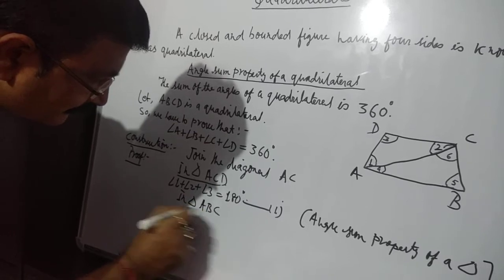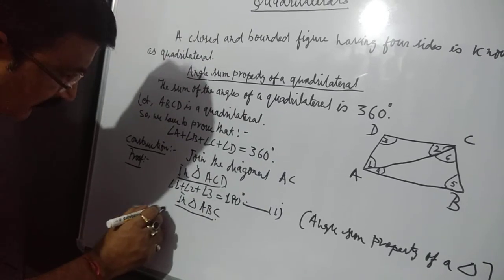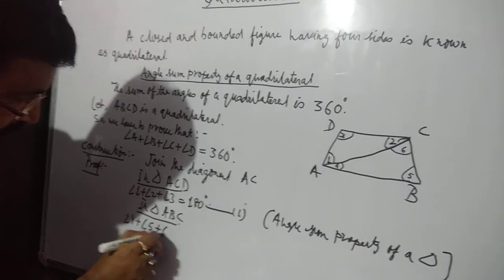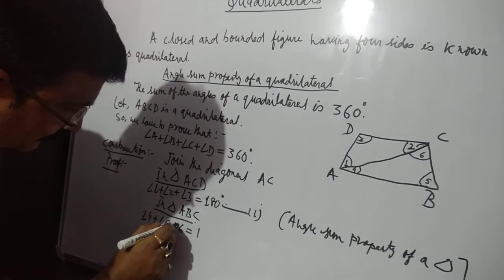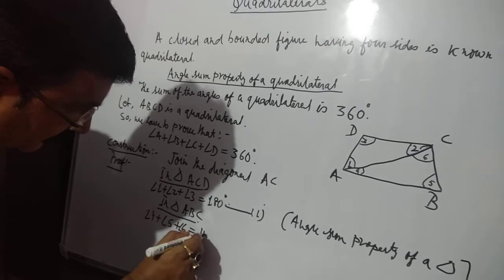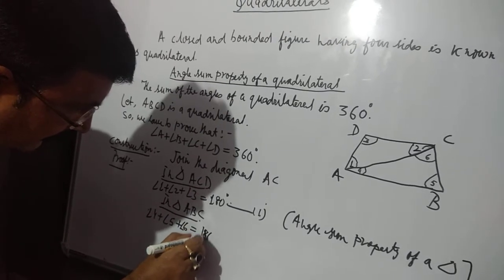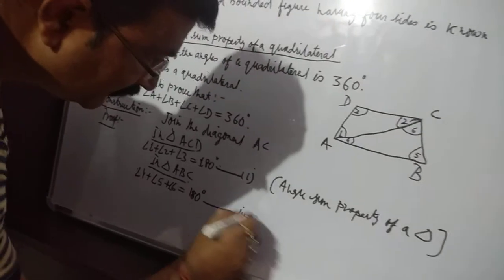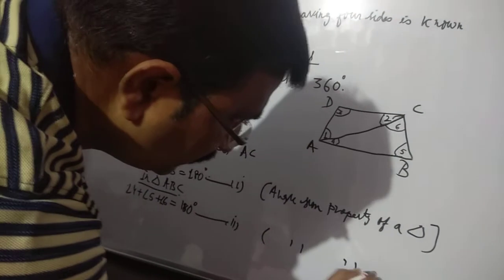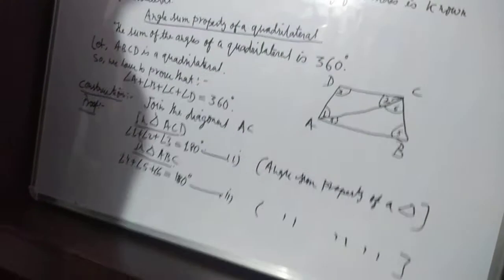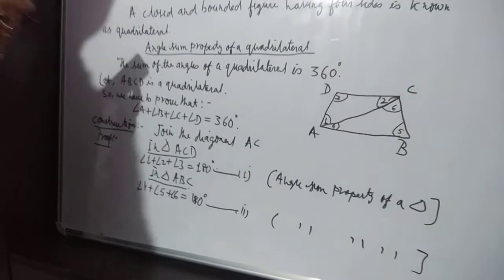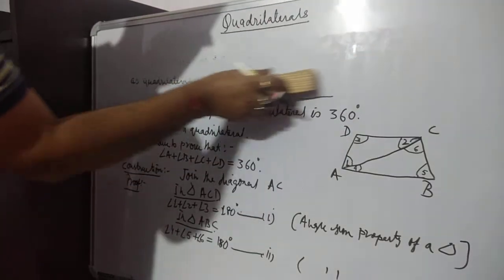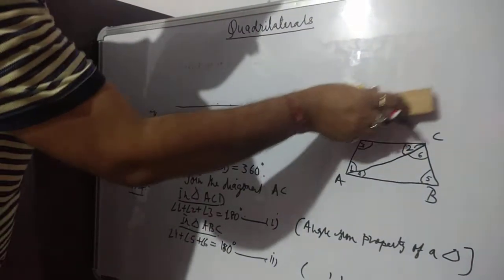Again in triangle ABC, angle 4 plus angle 5 plus angle 6 equals 180 degrees — equation 2. This is also the angle sum property of a triangle. Now adding equation 1 and equation 2.